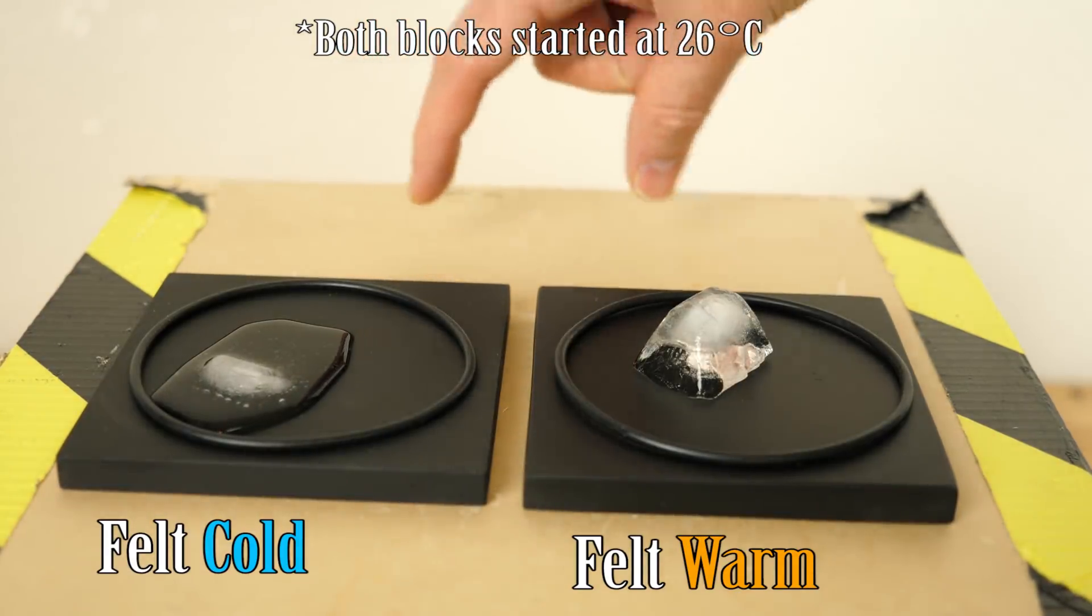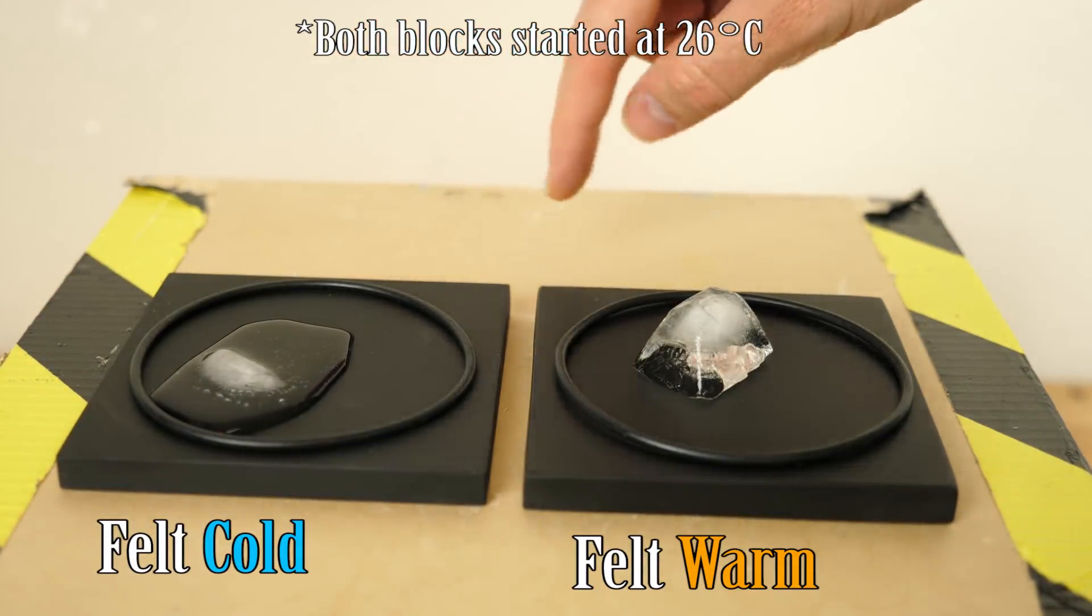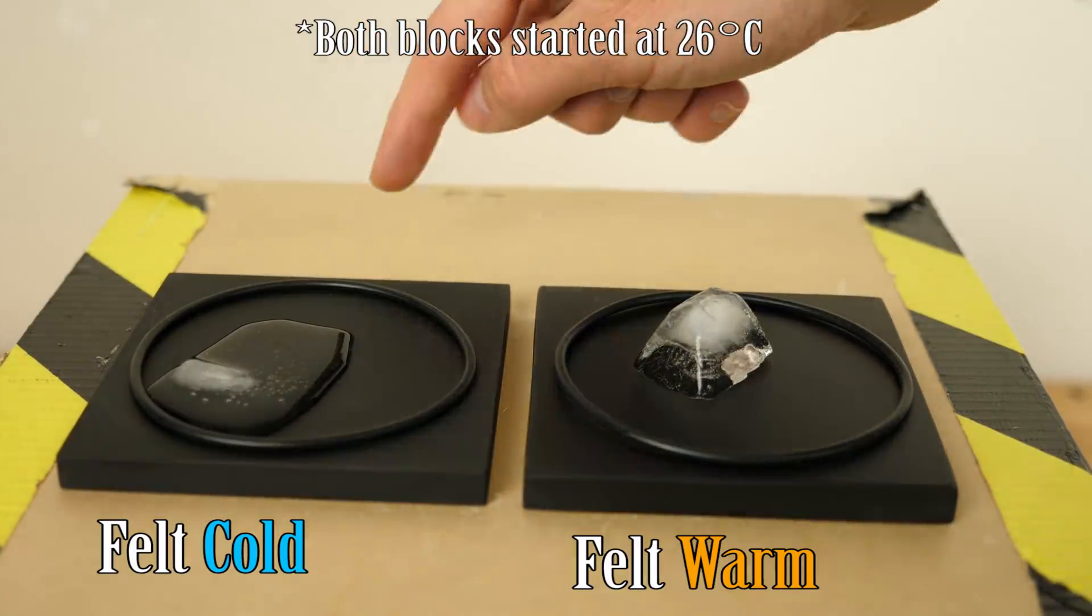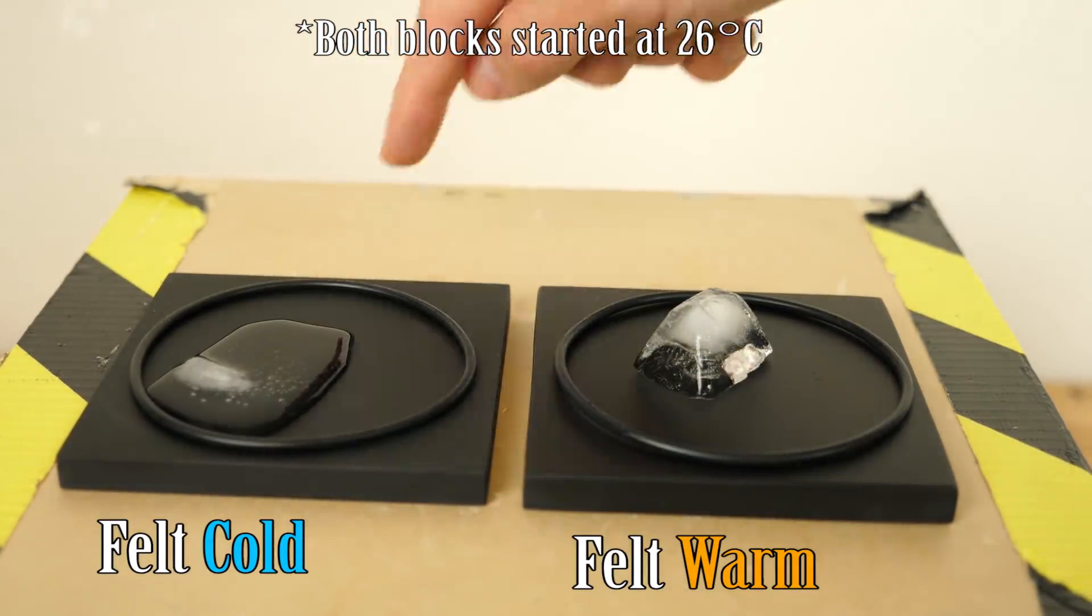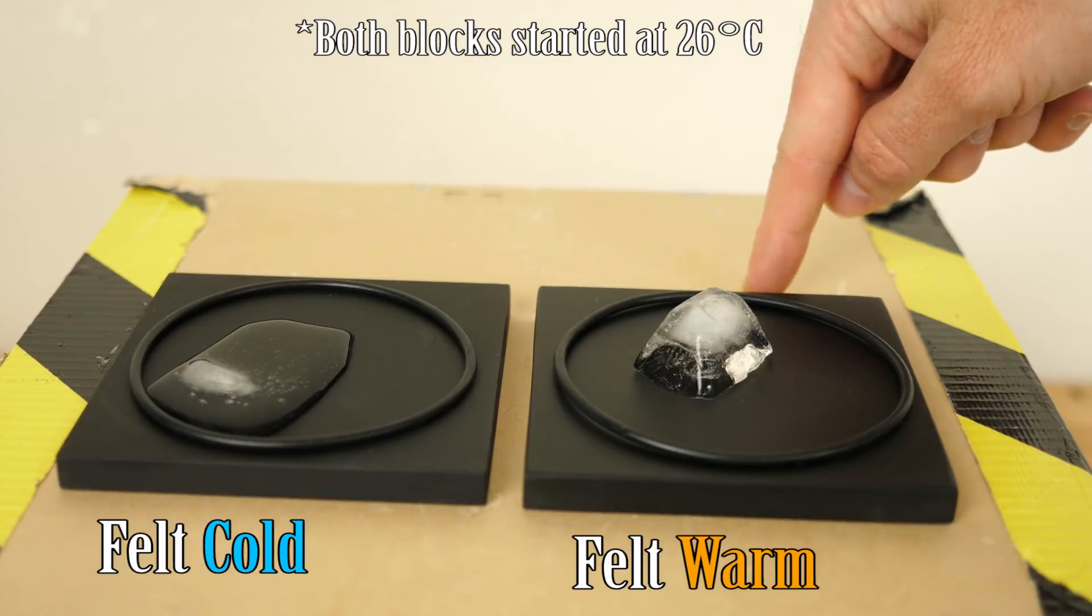How did these two blocks with the same exact starting temperature melt the ice at different rates? It's because this one is made out of aluminum and this one is made out of a very insulative plastic.